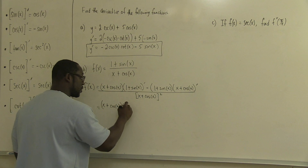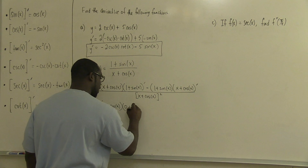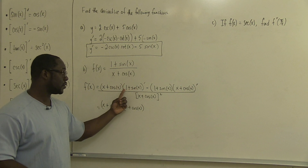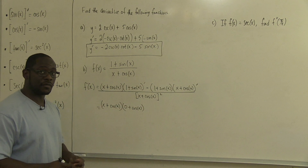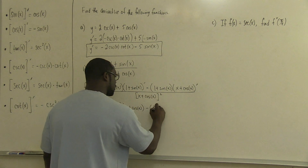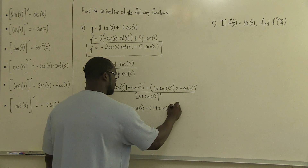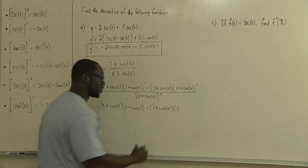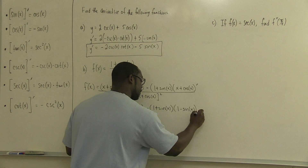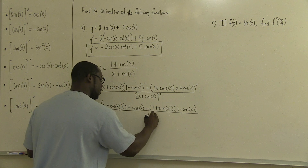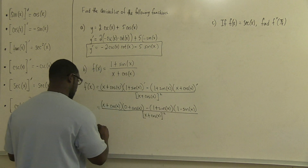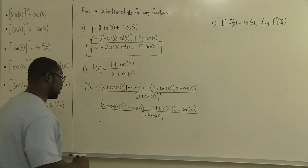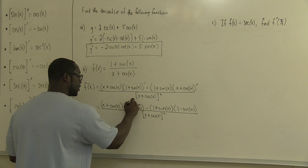The derivative of 1 is 0, and the derivative of sine x is cosine x. We know from earlier in this series that for a sum of functions, we can take the derivative of each and add up the answers. Then we have minus the quantity 1 plus sine x, times the derivative of x plus cosine x. The derivative of x is just 1, and the derivative of cosine x is minus sine x. All of that is over x plus cosine x, quantity squared. Note that 0 plus cosine x is just cosine x.